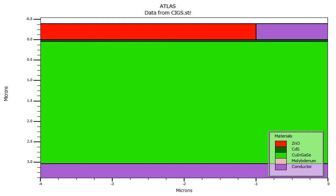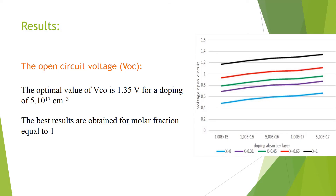The structure used in the simulation is shown in this slide. When we increase the doping of the absorber layer, the open circuit voltage increases, and the optimal value of the open circuit voltage is 1.35 V for a doping of 5×10^17. The best results are obtained for a molar fraction equal to 1.